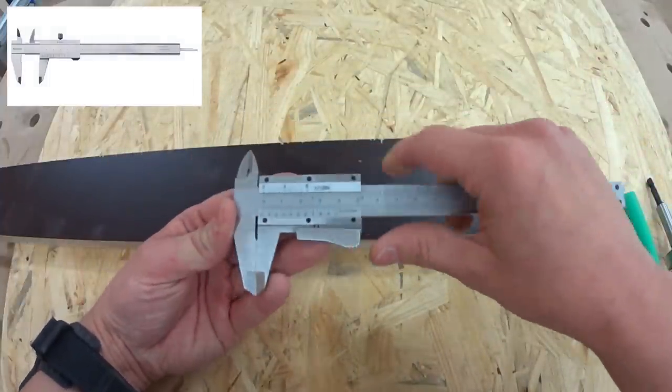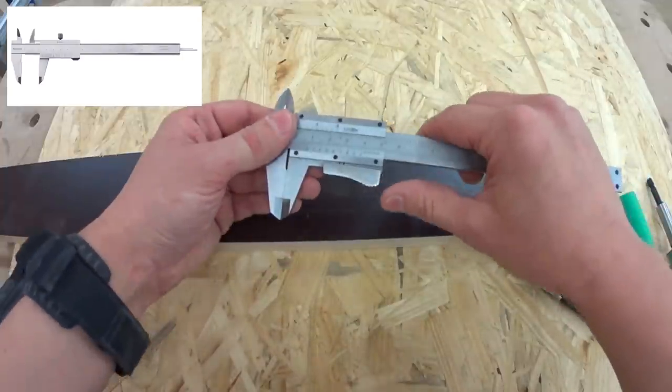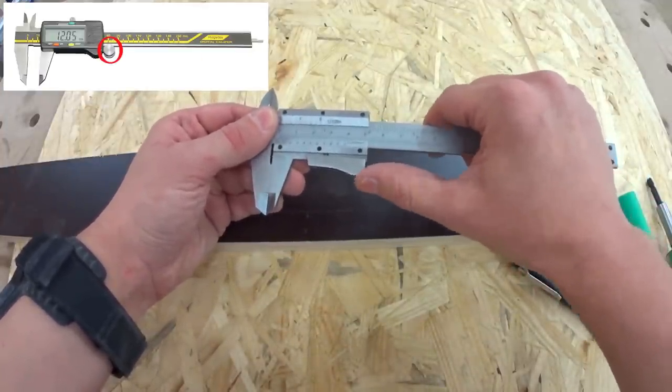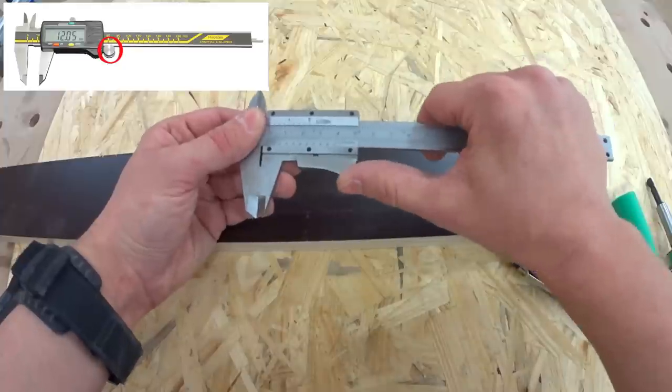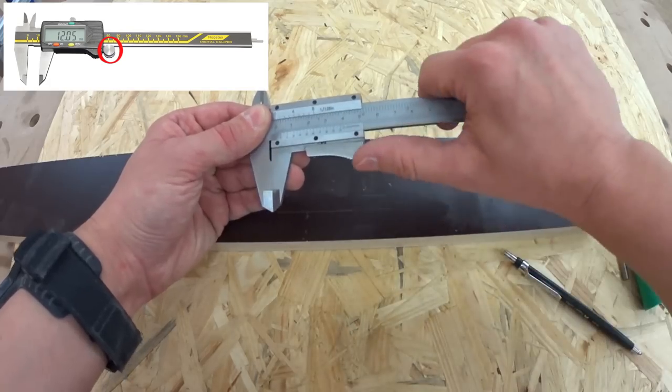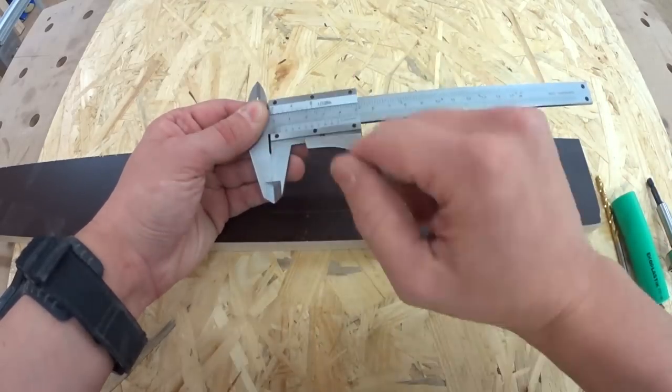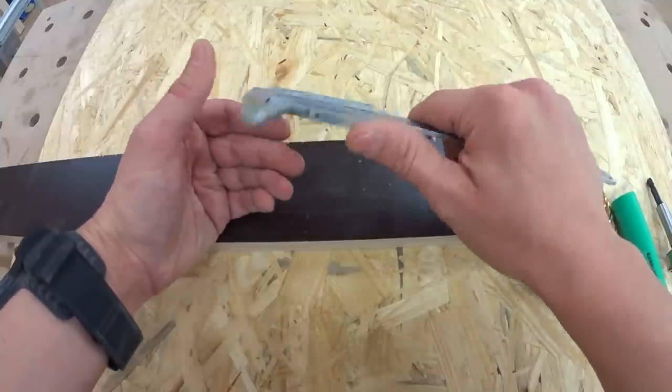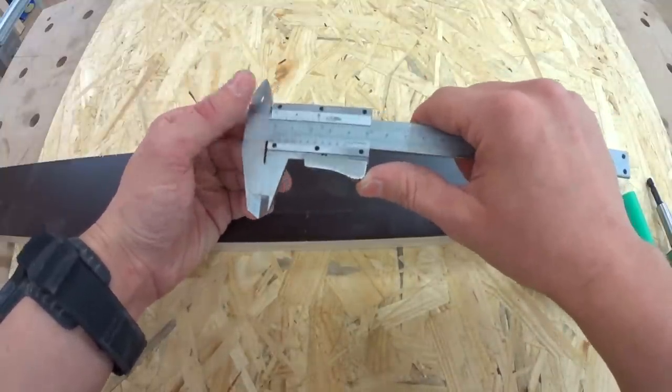And there's another way to do this. Some have here a thumb wheel. You turn this wheel and while you're turning this wheel, the slider moves. If you turn it that way, the slider moves in. If you turn it that way, the slider moves out. That's my favorite kind of caliper.